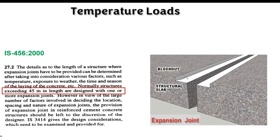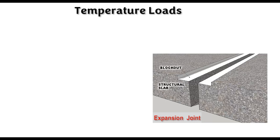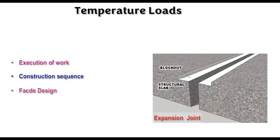Let us start with the expansion joint as given in IS 456-2000. It is clearly mentioned that when the building or structure normally exceeds 45 meters in length, it should be designed with one or more expansion joints. The provision of expansion joints in reinforced cement concrete structures should be left to the discretion of the designer. Sometimes these expansion joints affect the execution of work, construction sequence, pocket design, and are sources of leakage in monsoon during the lifetime of the structure.